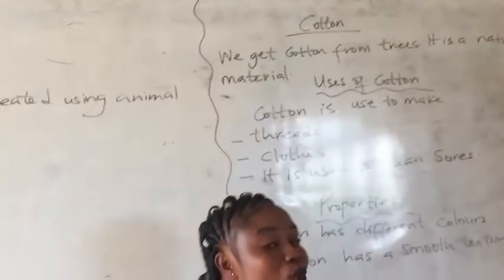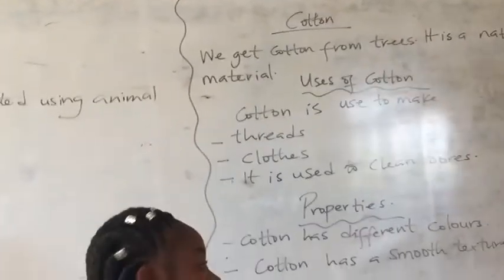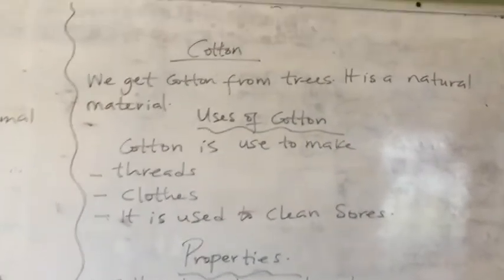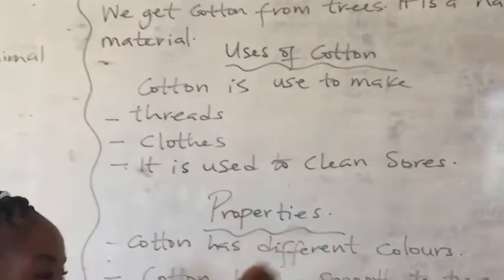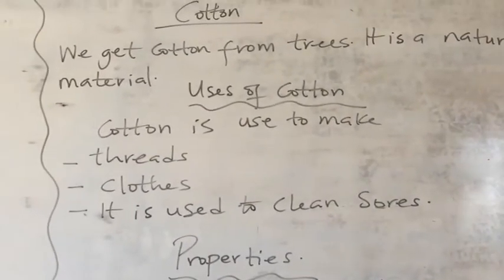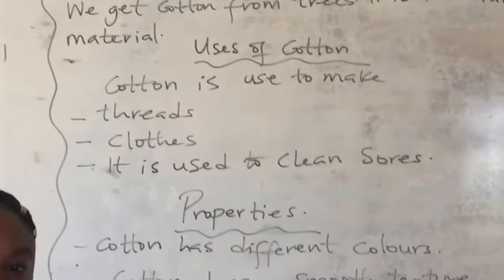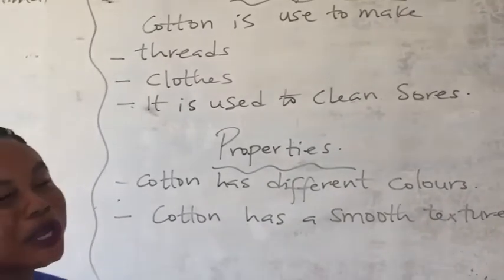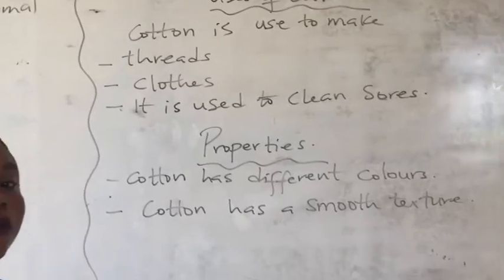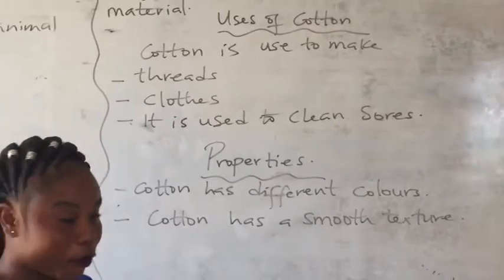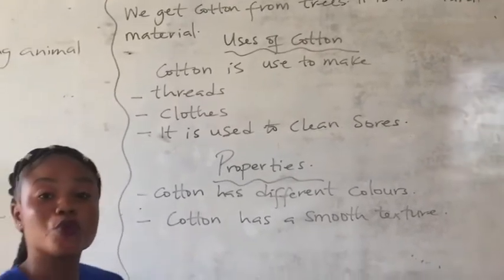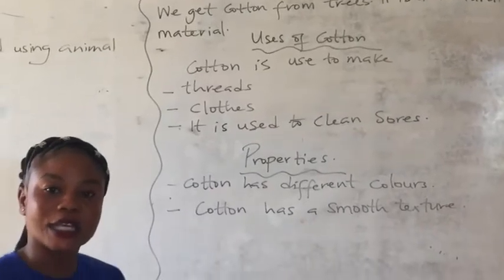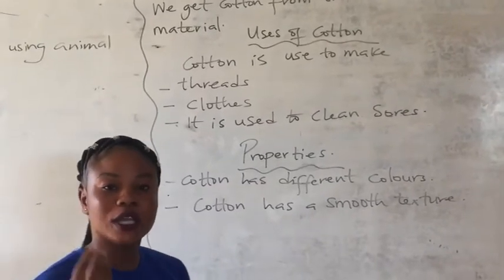Our clothes that we wear are made out of cotton. Properties of cotton: cotton has different colors — we have white, we have cream color, and different kinds of colors. Cotton also has a smooth texture; when you hold cotton, it has a smooth texture.